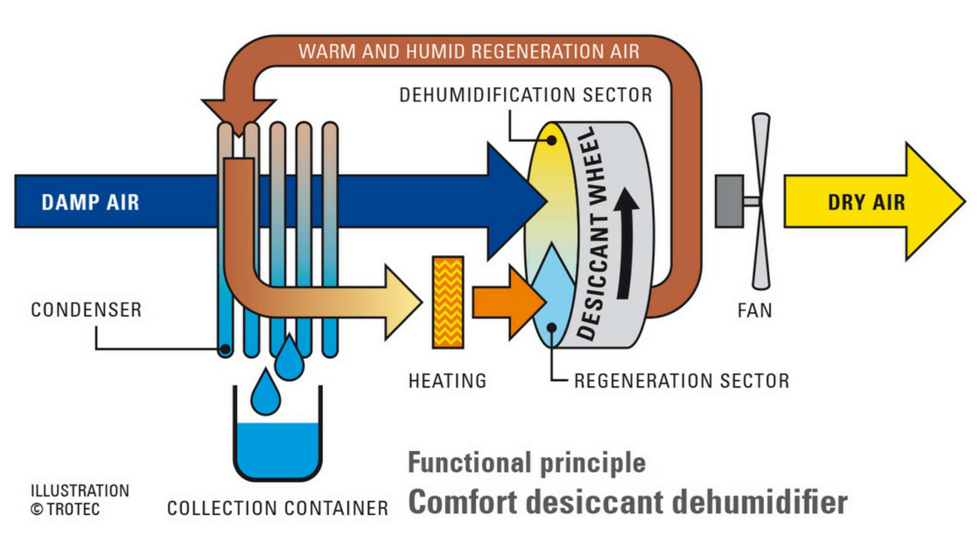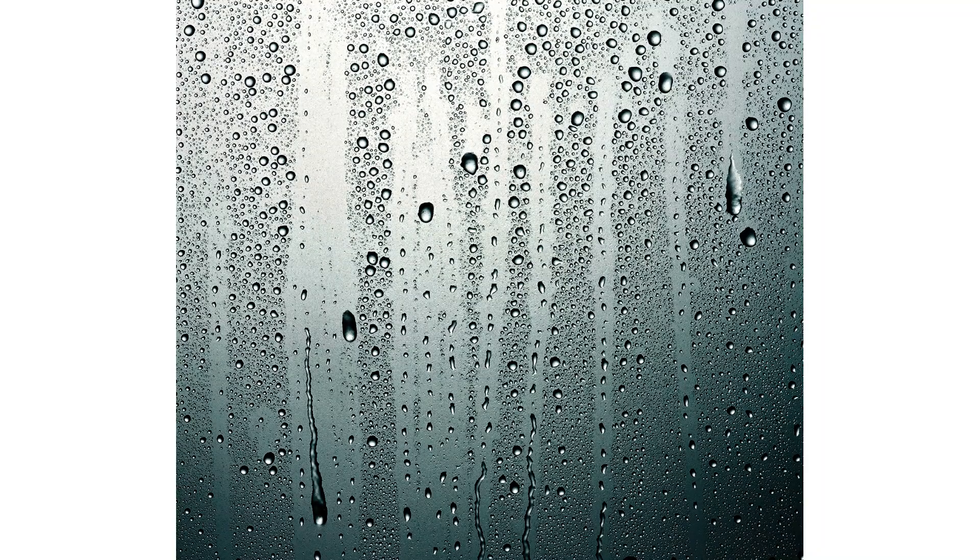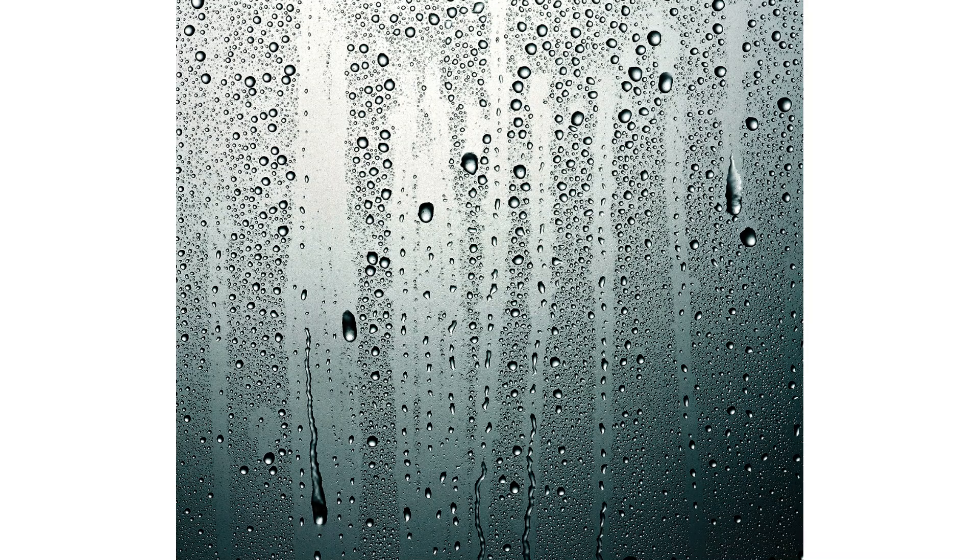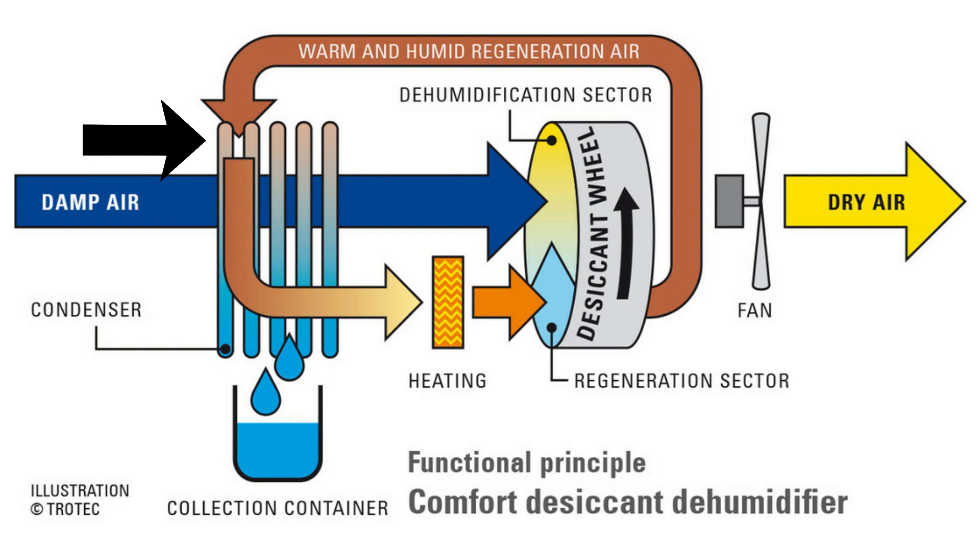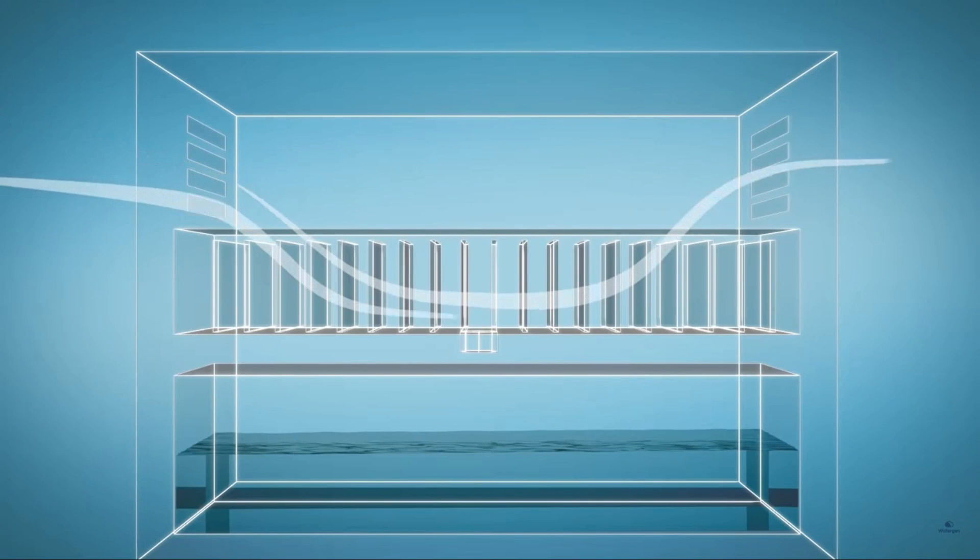The hot air becomes relatively more saturated with water. Note that water absorption capacity of air rises exponentially with the rise in temperature. Similarly, water retention capacity also drops dramatically with drop in temperature. So that relatively moist hot air is then passed through an air-cooled condenser. The drop in temperature of the hot moist air results in condensation and collection of water.